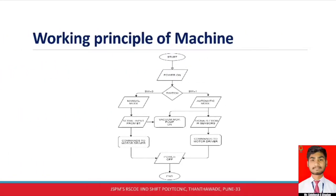We will now explain the working principle of the autonomous floor cleaning machine. The machine operates on the principle of equilibrium — maintaining a horizontal position relative to the floor, so the machine will hover over the same spot. The machine works on two modes: first, manual mode, where we operate the machine using a Bluetooth module controlled by a mobile application; and second, autonomous mode, where it runs automatically by means of an IR sensor — that is, an infrared sensor — which avoids obstacles.